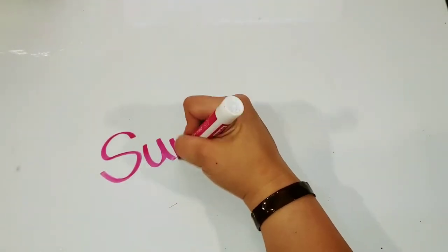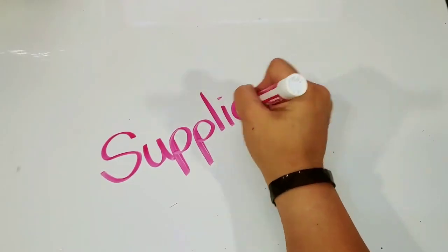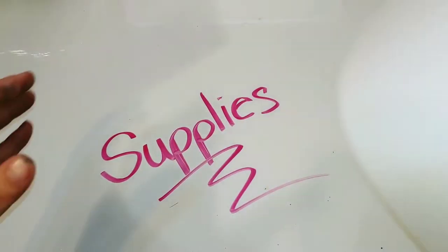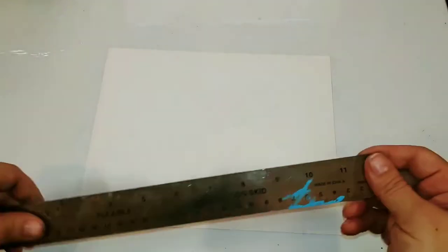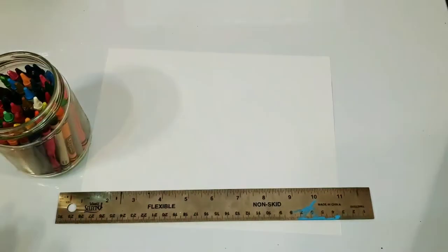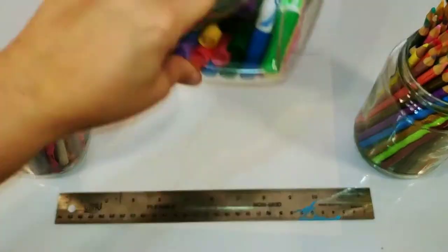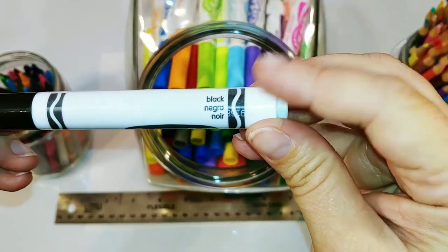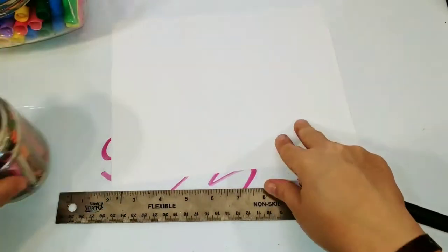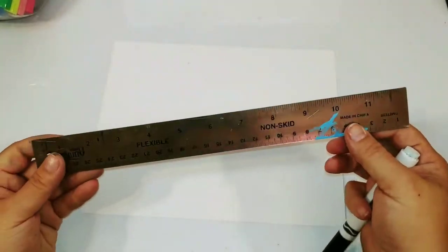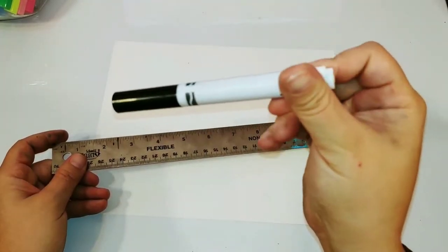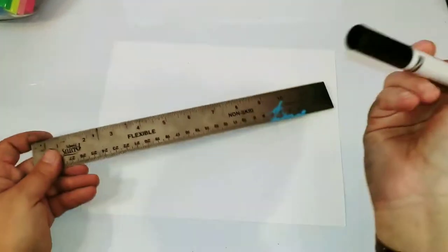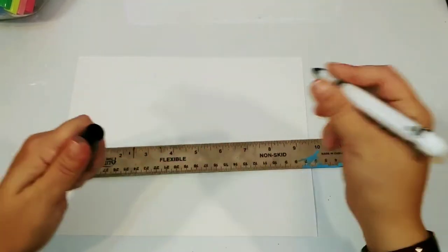So let's jump right into project six. Here are the supplies you're going to need for this project: paper, a ruler or straight edge, crayons or colored pencils. I'm going to be using markers today and you're going to need something black to draw with.